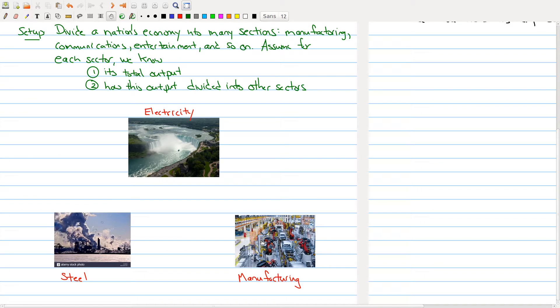Now each of these industries are going to have their output go to one of the other sectors or it will go to itself. Let me draw some things here to keep track of this information. Let's say that half of the output of electricity goes to the steel industry, and the steel industry sends 20% of its output to electricity.